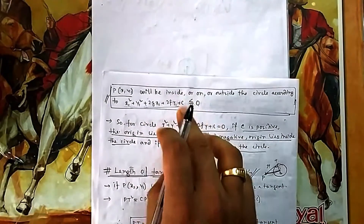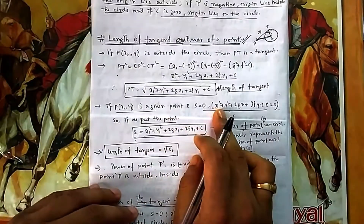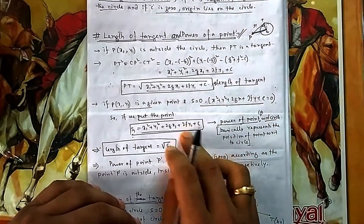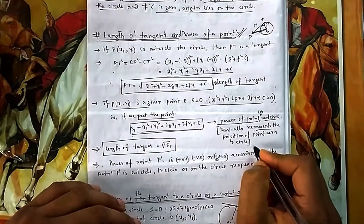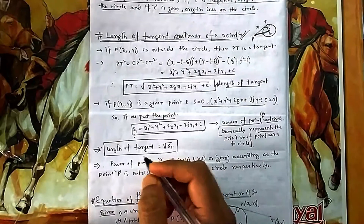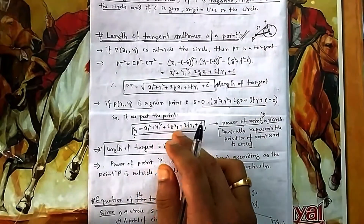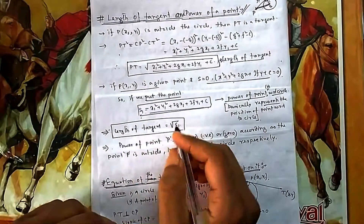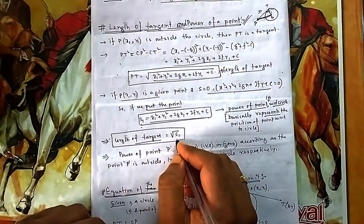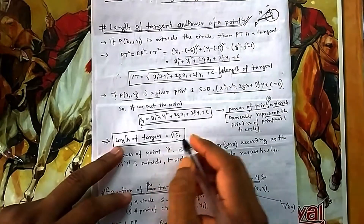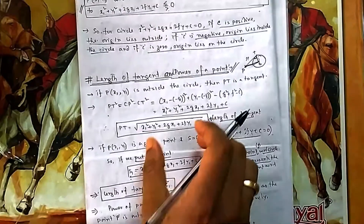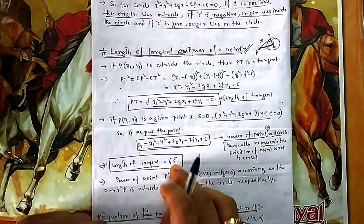The power of a point S₁ tells you the position of P relative to the circle: if S₁ is less than zero, the point is inside; if S₁ equals zero, the point is on the circle; if S₁ is greater than zero, the point is outside. The length of the tangent equals √S₁, so this is why power of a point is useful.